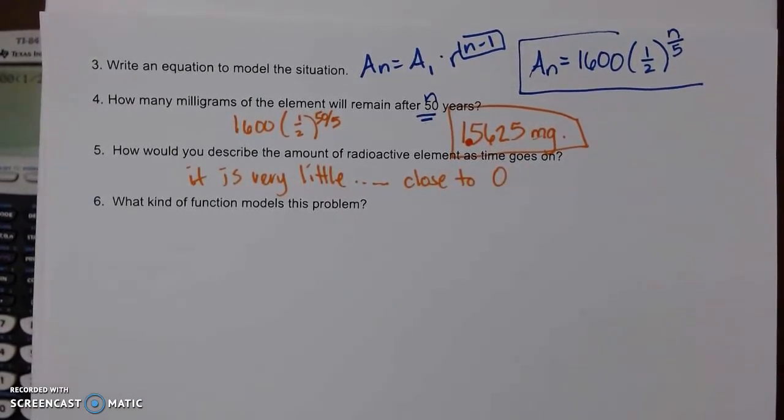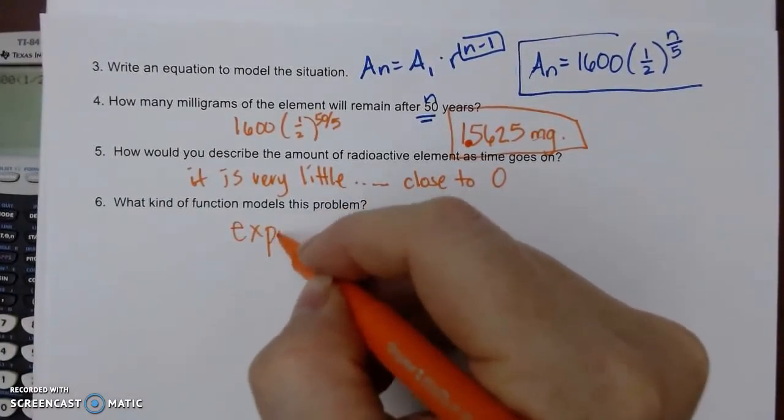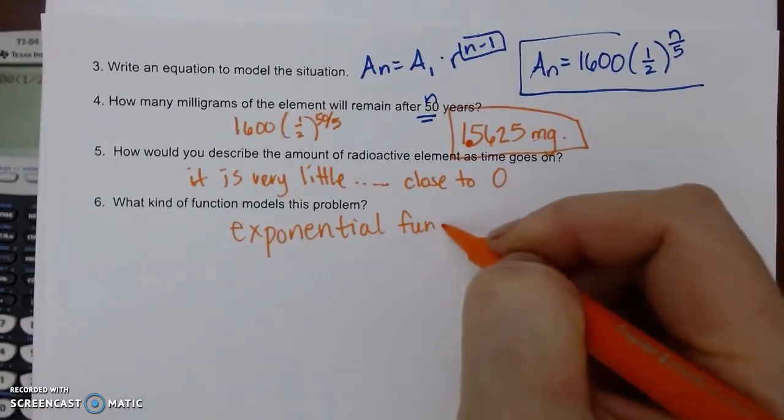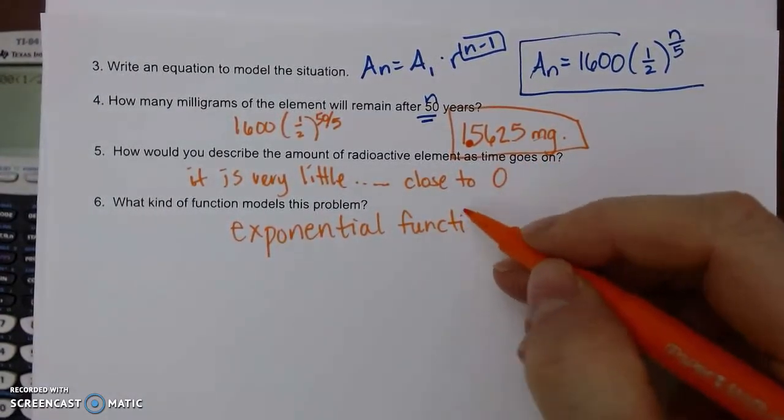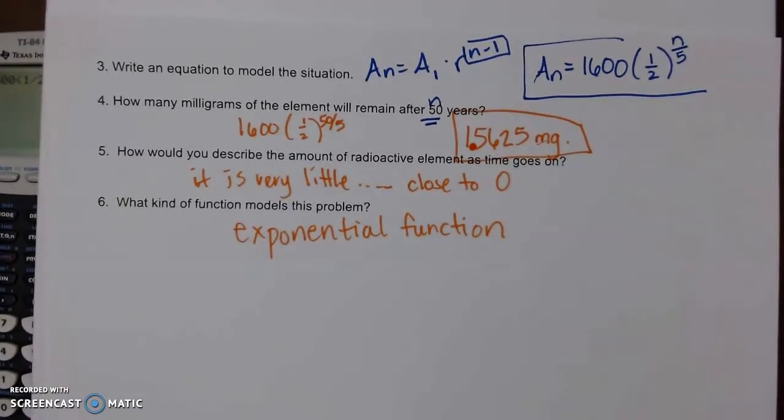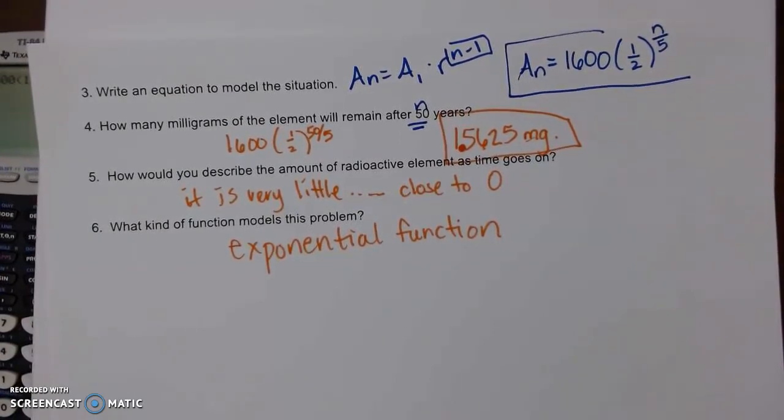What kind of function? What we just talked about is geometric, so that is an exponential function. Your choices are exponential, quadratic, linear, but it's a curve and we're multiplying by a half every five years, so that is a geometric exponential function. Your example might be slightly different, so adjust as needed.